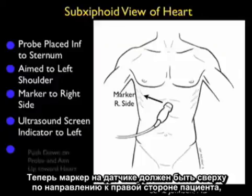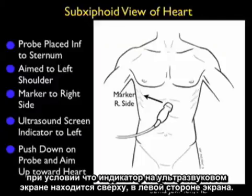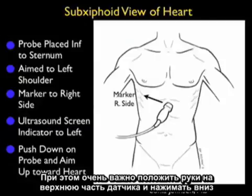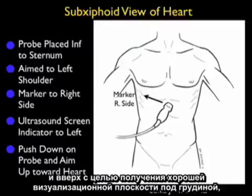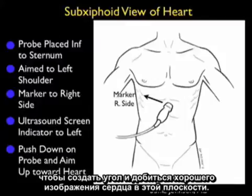The marker dot on the probe should be over towards the patient's right side, with a caveat that the ultrasound screen indicator dot is over towards the left of the screen. It's very important to put your hands on top of the probe and really push down and up to get the good imaging plane underneath the sternum to make the angle to get a good view of the heart from this plane.